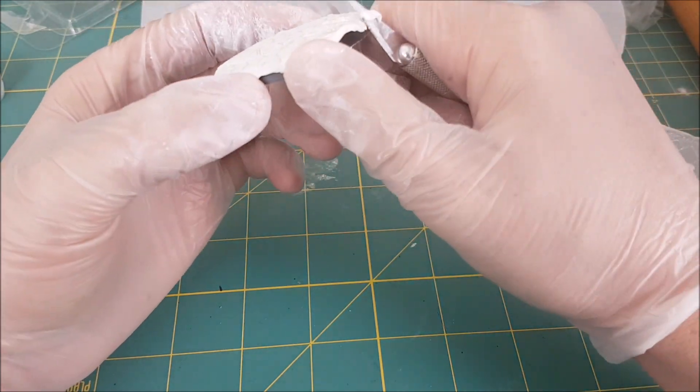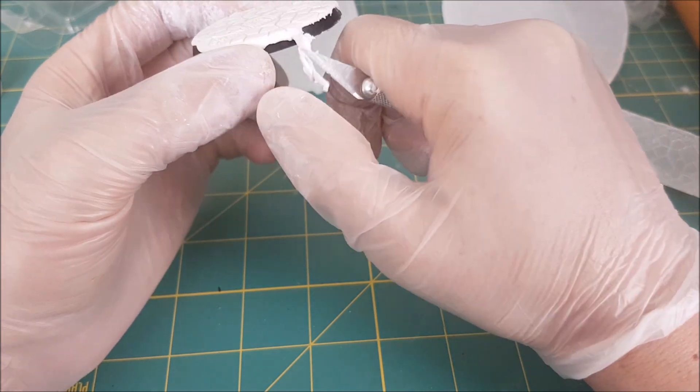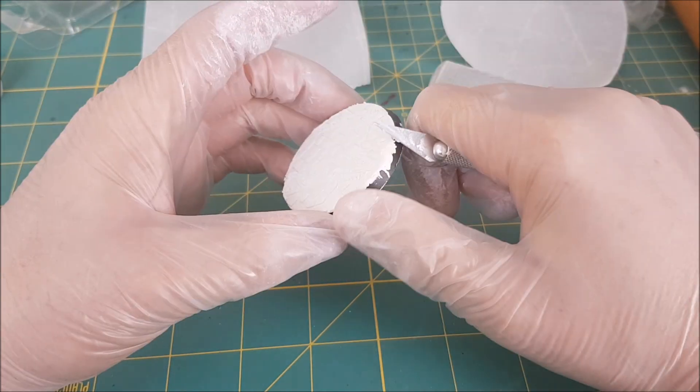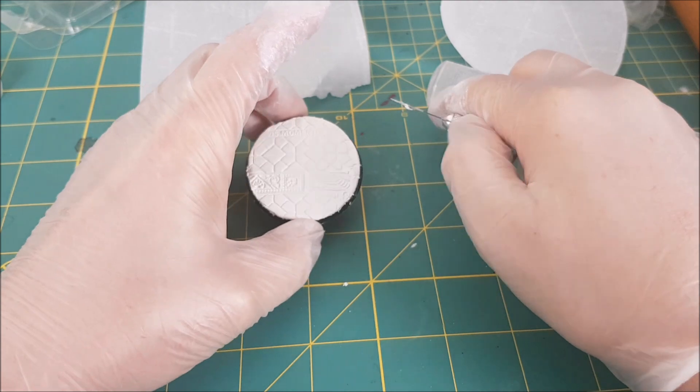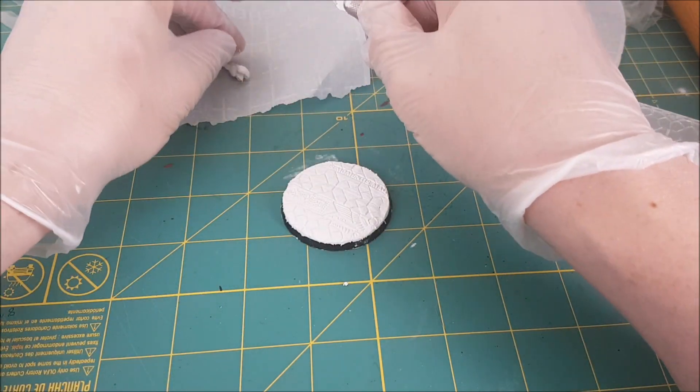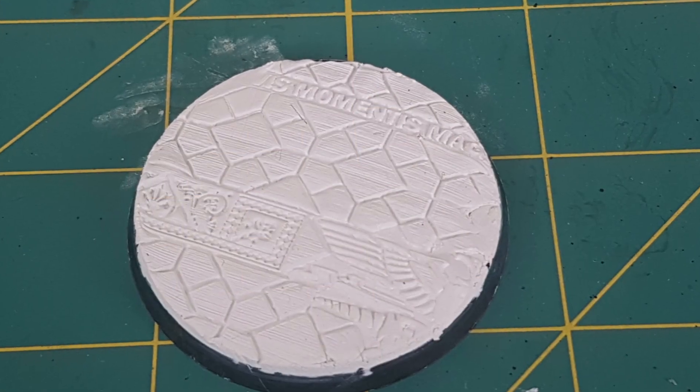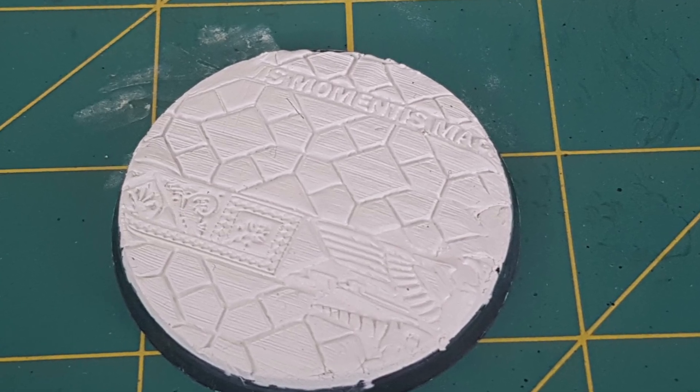After I've pressed the texture into the milliput with the roller, I'm then taking my hobby knife and cutting some nice clean edges around the base. I'm then giving that 24 hours to cure, and then I'm going to use a file just to smooth the edges.